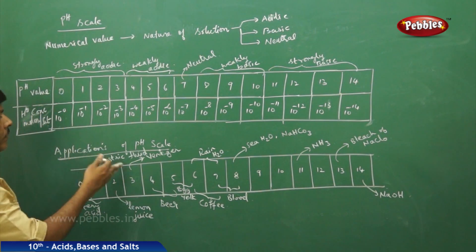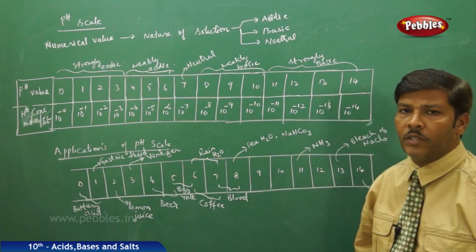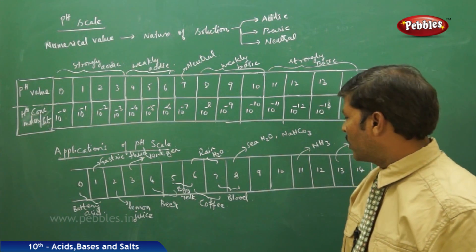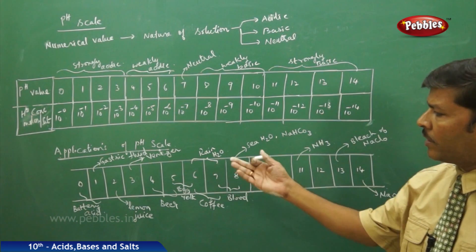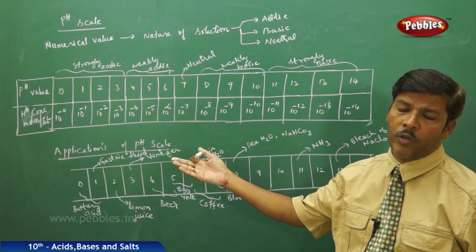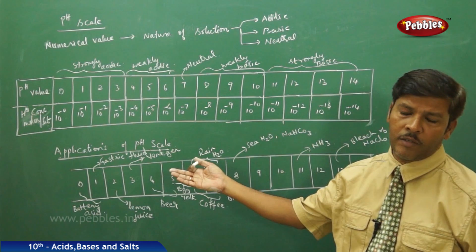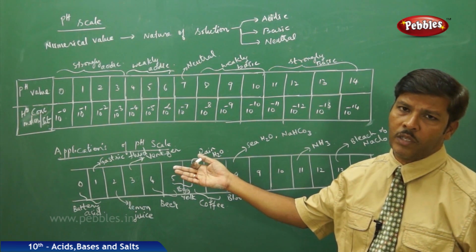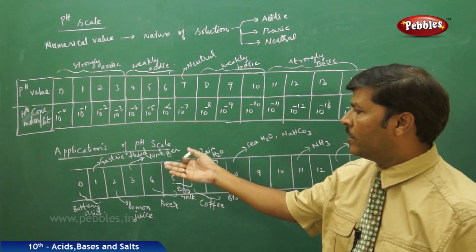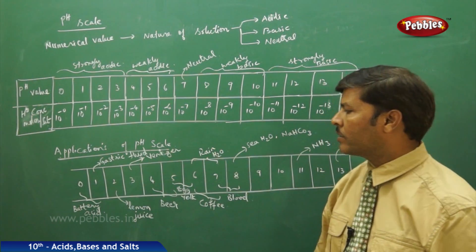Looking at the applications of the pH scale: the working quality of a battery always depends on the amount of acid present in it. The more concentrated the acid, the more life the battery has. Because a lesser pH value means more H+ ion concentration, the pH of battery acid is 0 to 1.